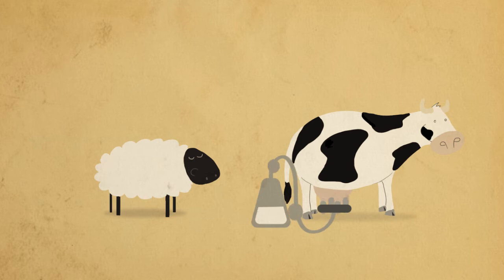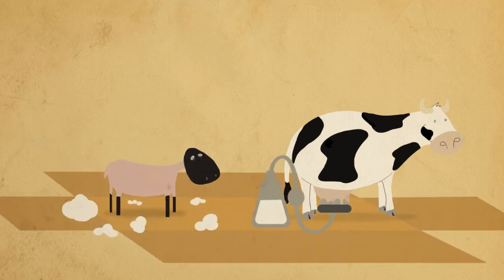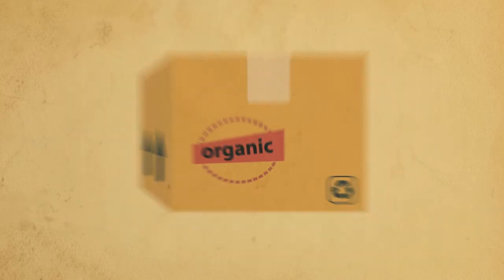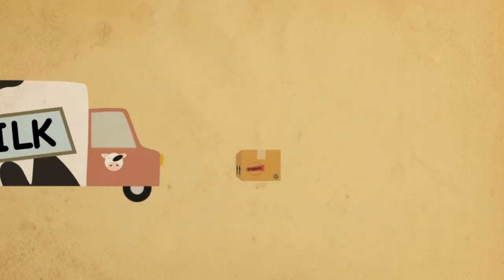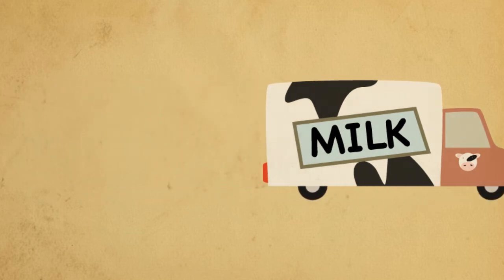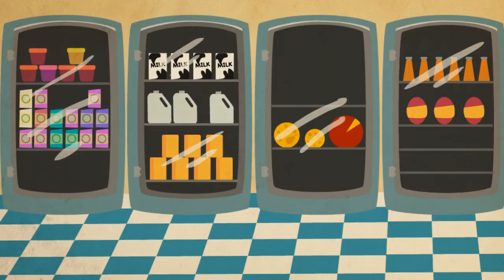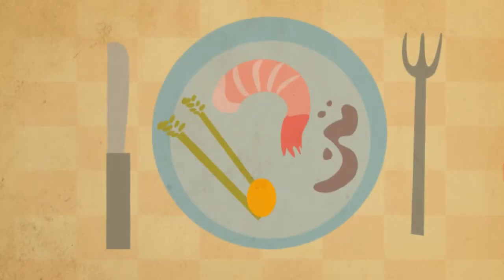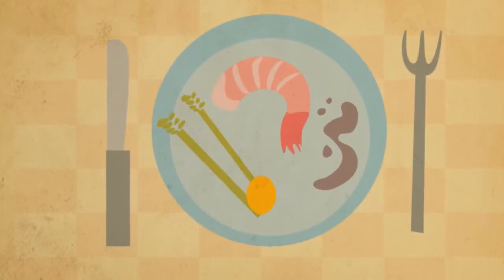And before the food gets to the consumer, it has to be stored, packaged and transported, finally reaching the shelves of our supermarkets as fresh and processed foods. These goods are known as the outputs of the farming system.